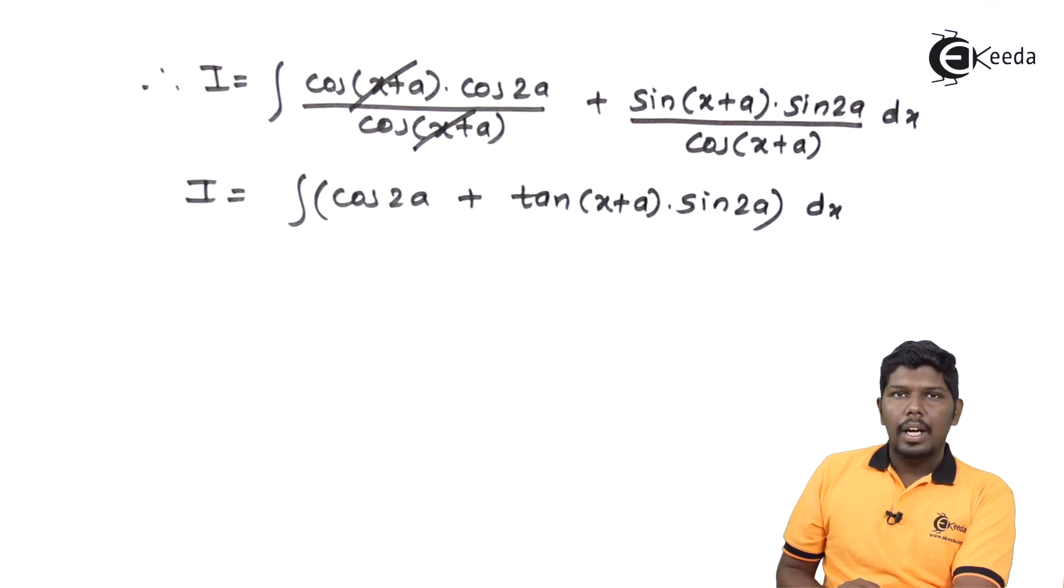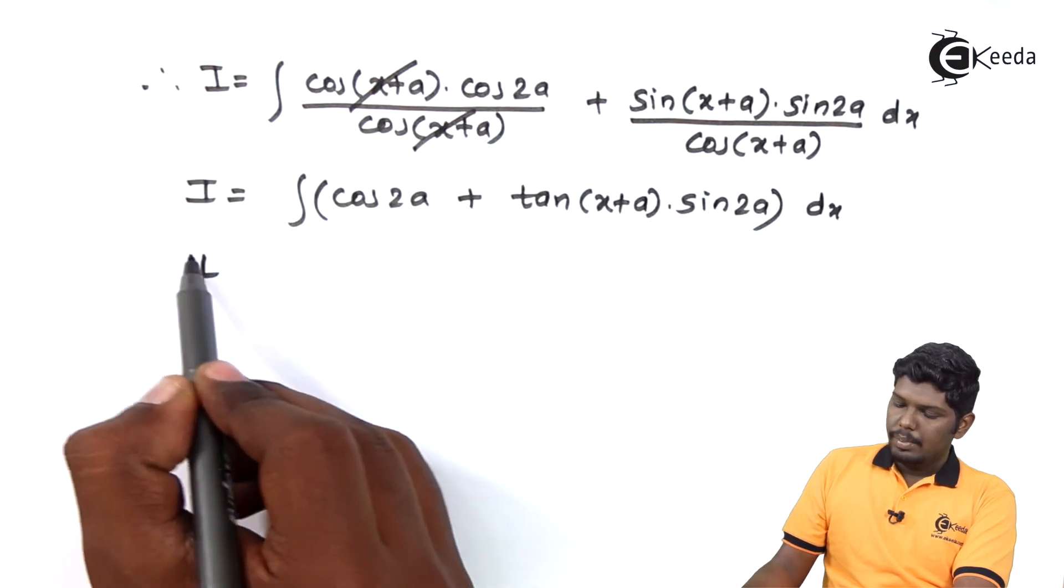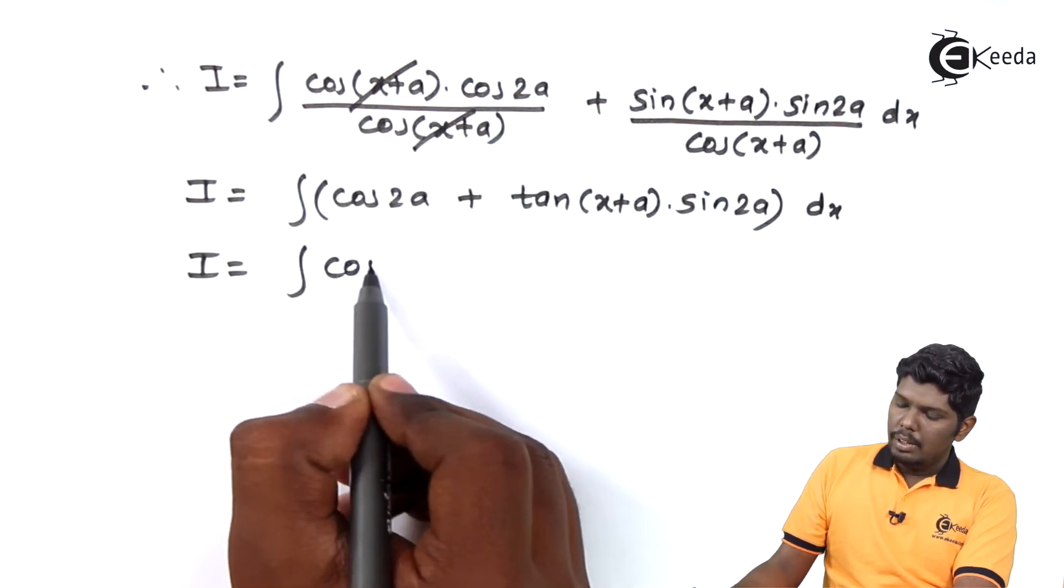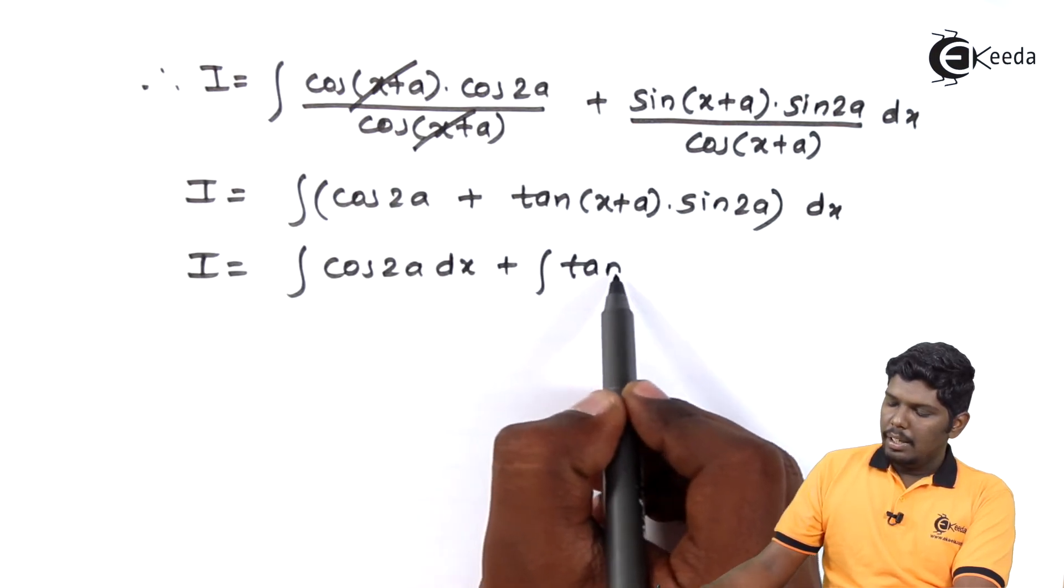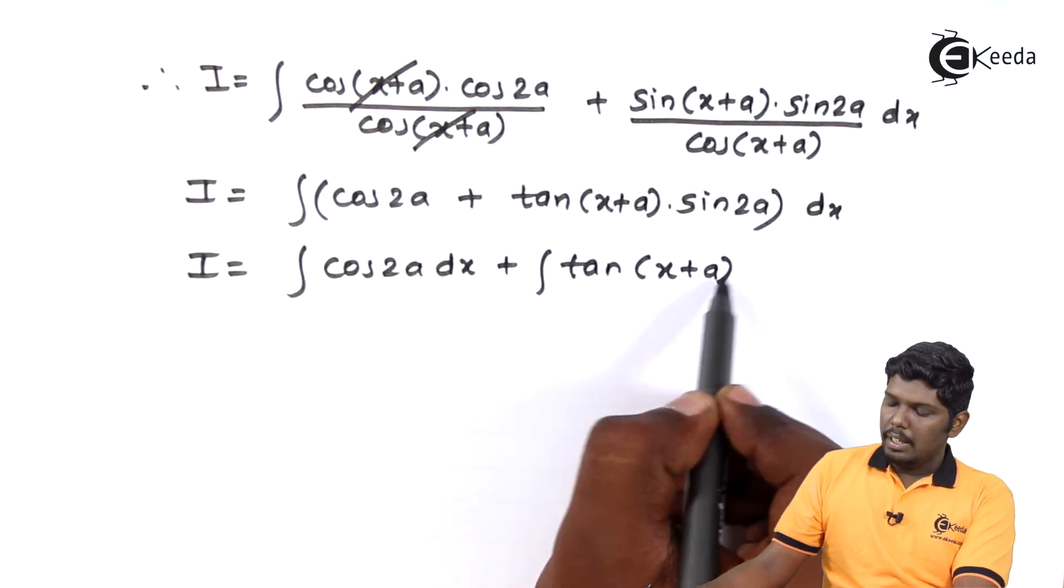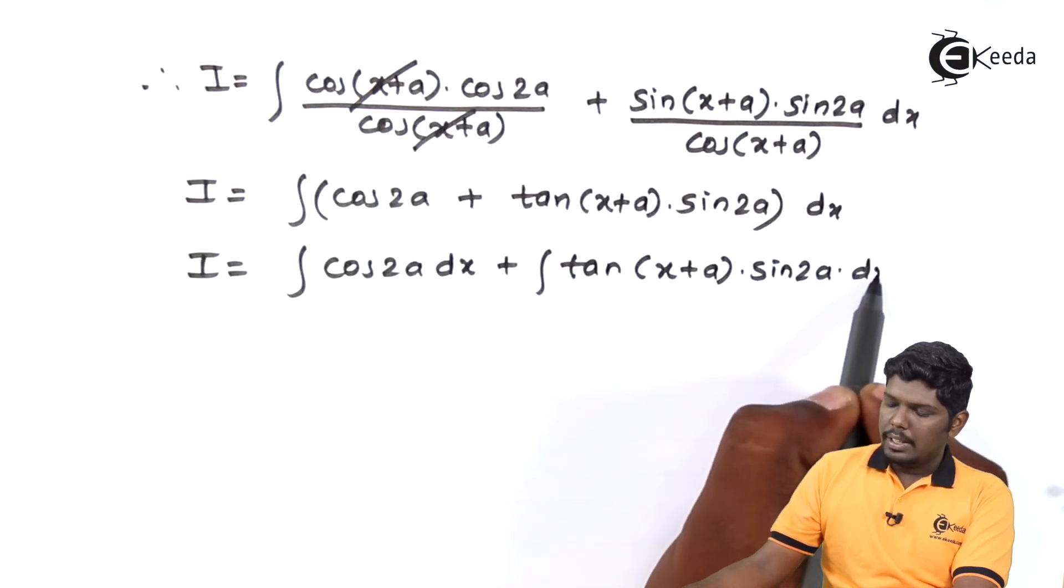Now let us separate the integral. I is equal to integral cos 2a dx plus integral tan of x plus a into sin 2a dx.